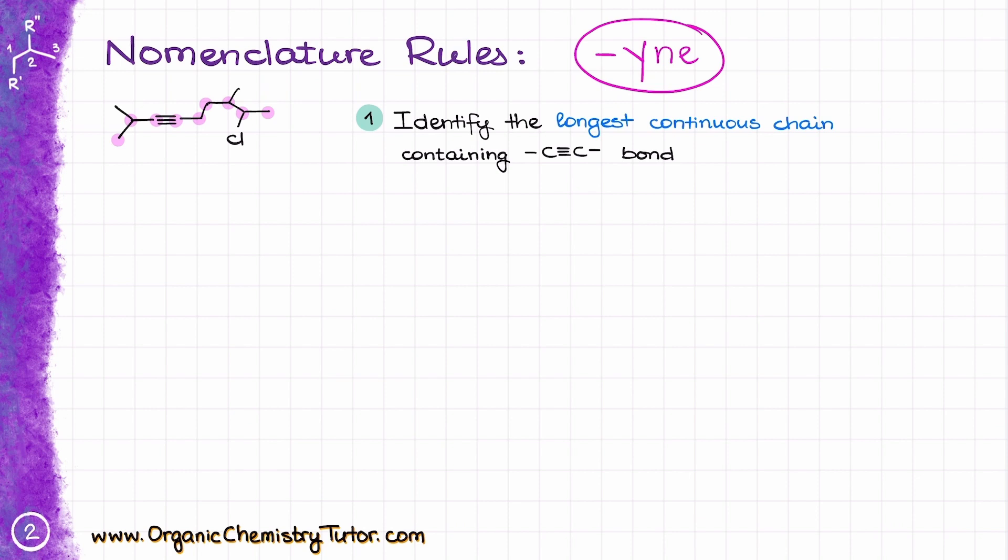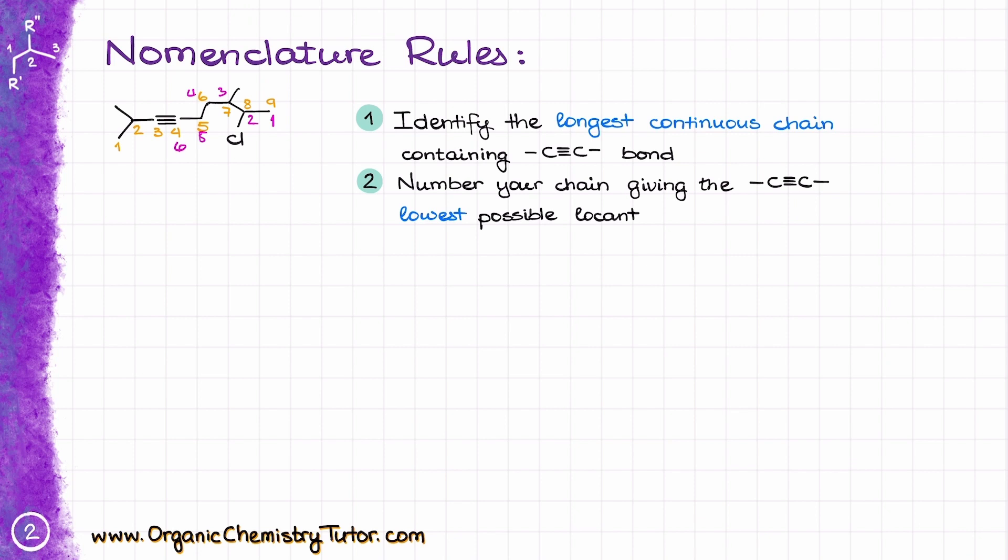Next, we'll need to number our chain, giving the lowest possible locant or a number to our triple bond. In this example, we'll have to number our molecule from the left side. This would give number three to the first carbon of the alkyne. If I were to number it from the other side, I would end up with the carbon number 6, which is obviously larger, and in that case, that would obviously not be correct. In case where we have multiple possibilities, we'll go with our normal tiebreakers, where we would first look at the position of other groups, and if we still have no difference there, we'll look at the alphabetical order at that point.